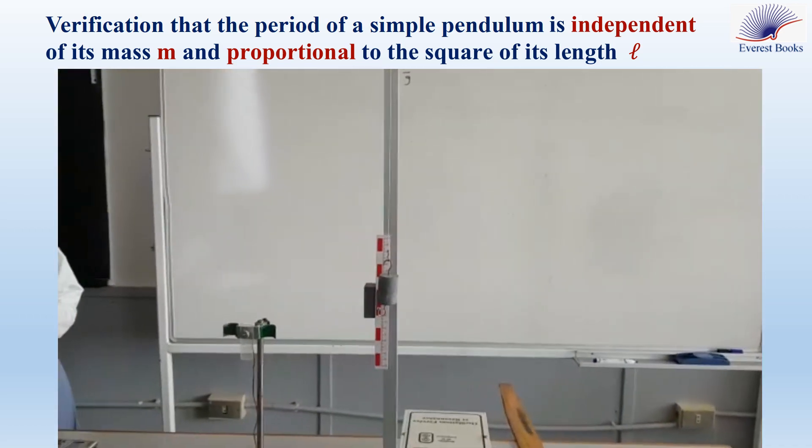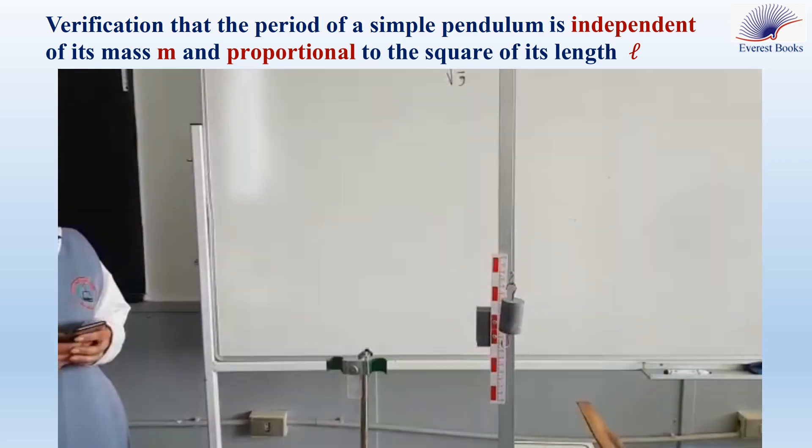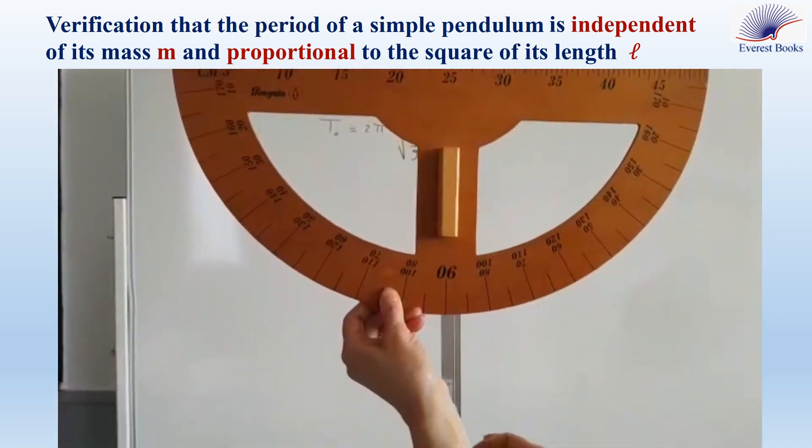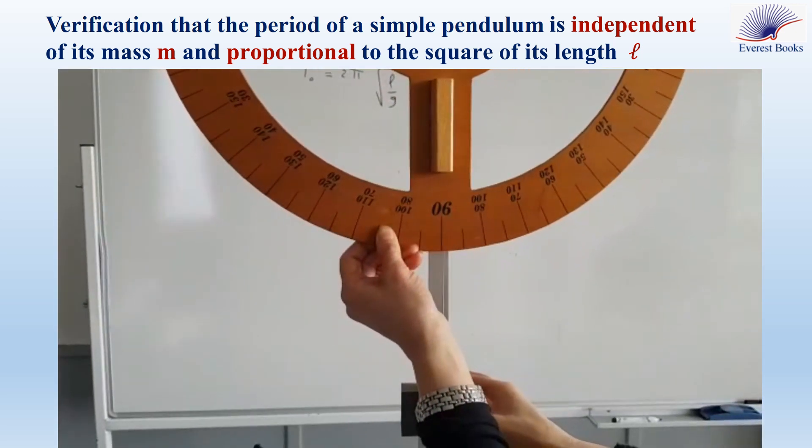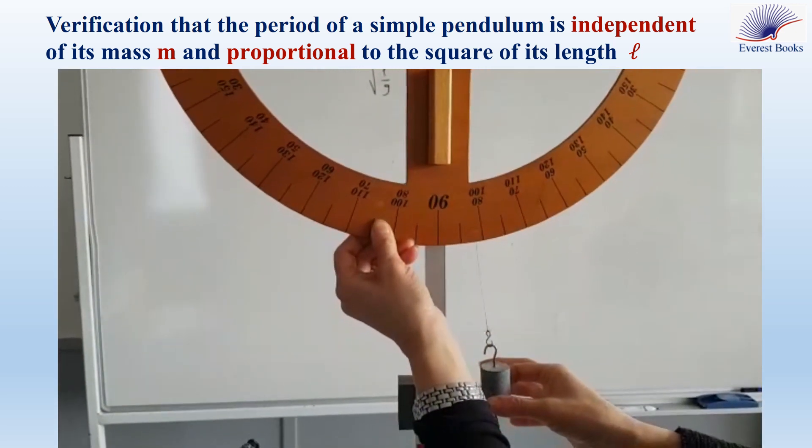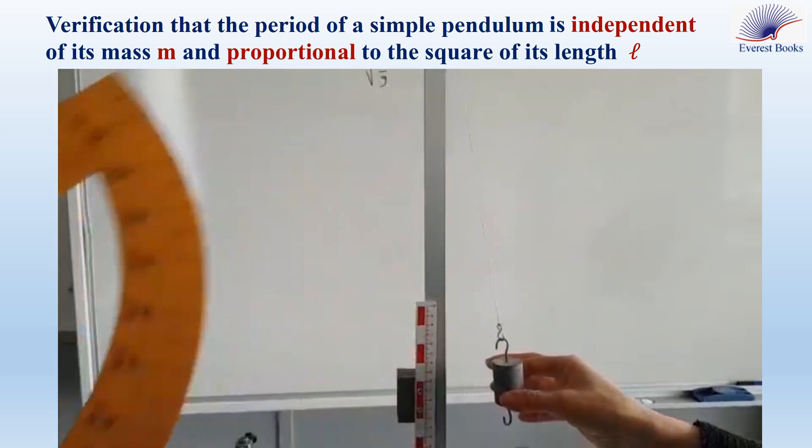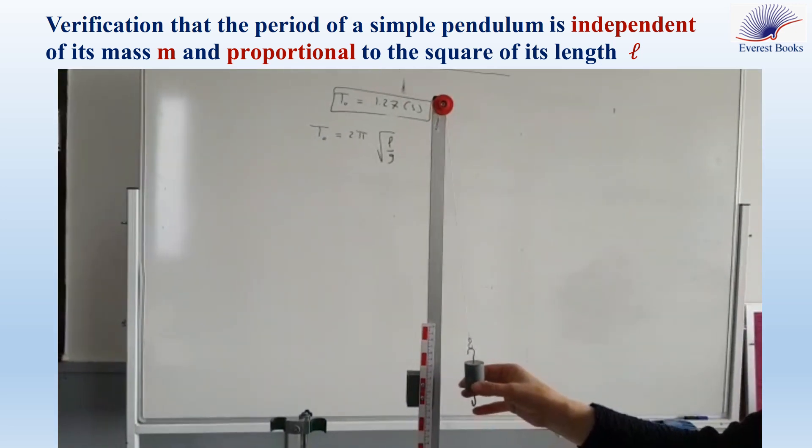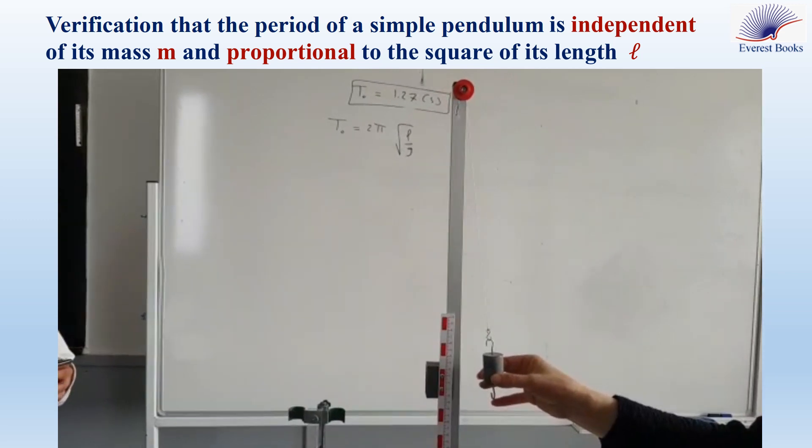So we will follow the same procedure as in the previous experiment. We will shift the pendulum from its equilibrium position by a small angle and then we will release it from rest. This is 10 degrees. We will measure the time for 10 complete oscillations and then divide this time by 10. Eileen, are you ready?